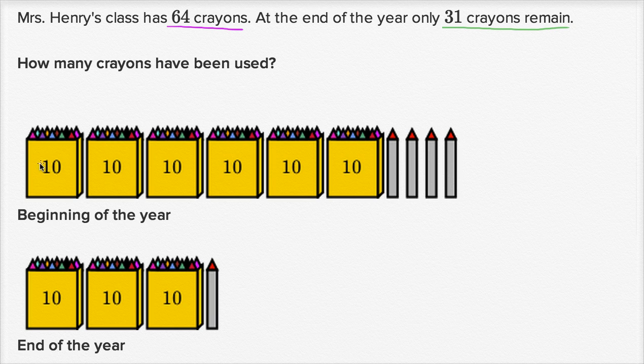And they give us a picture here. So at the beginning of the year, this is 64 crayons. Six tens and four ones. One, two, three, four, five, six tens. And one, two, three, four ones. So this is 64 at the beginning of the year.